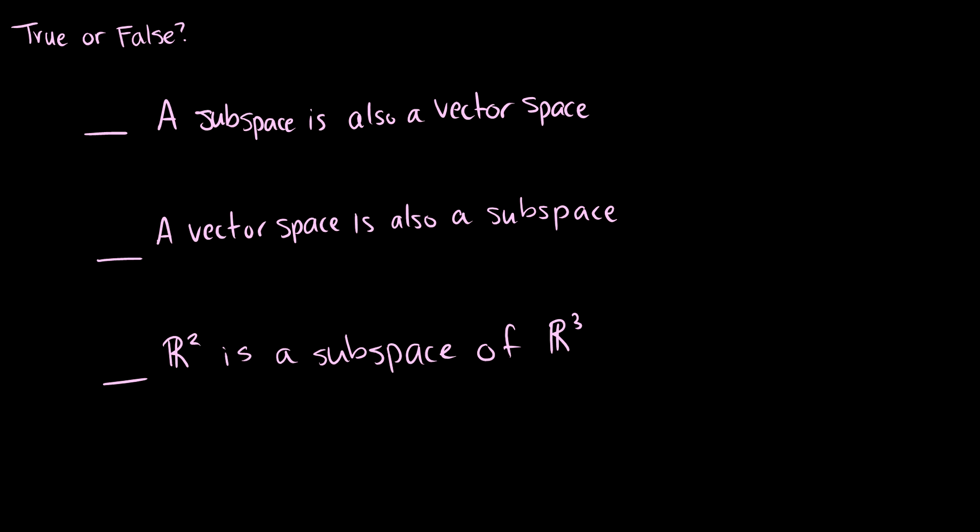Now for some true or false questions. Question 1: A subspace is also a vector space. A vector space has 10 axioms, while a subspace requires three main conditions: closed under addition, closed under scalar multiplication, and zero is in the set. But all vectors taken are from a vector space, so they satisfy the 10 axioms. Therefore a subspace is going to be a vector space.